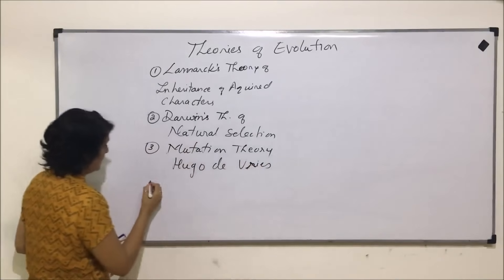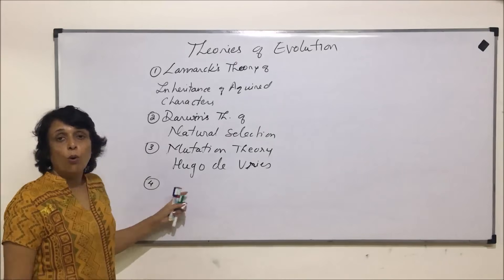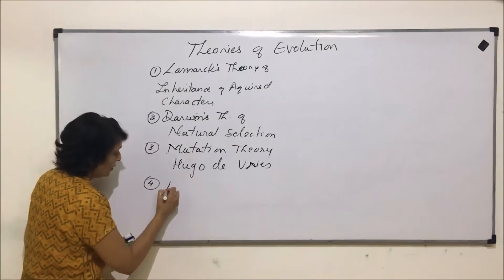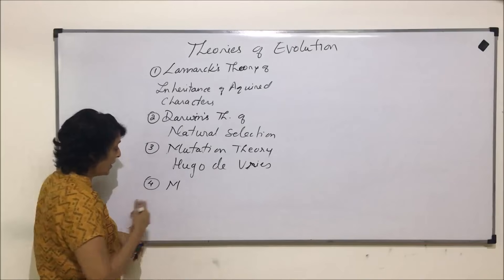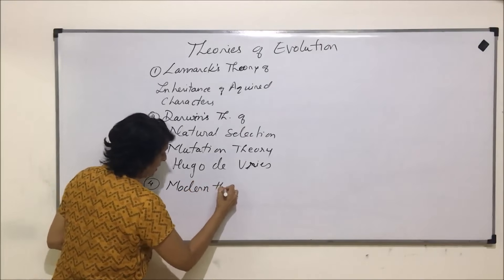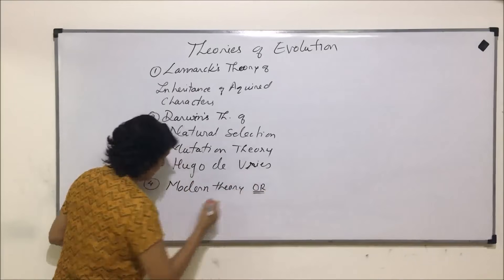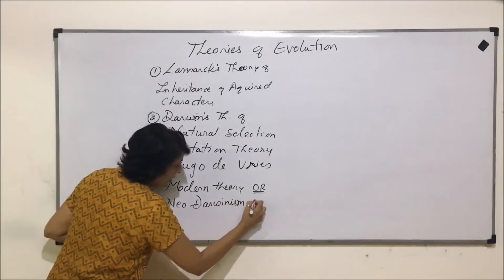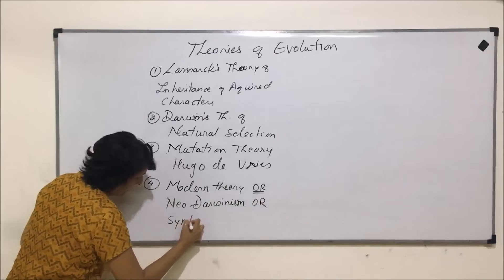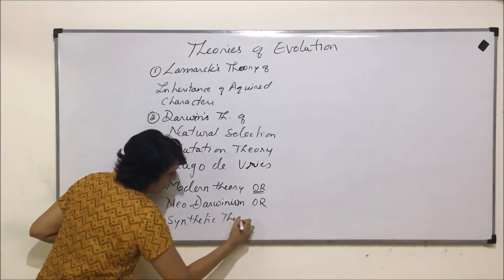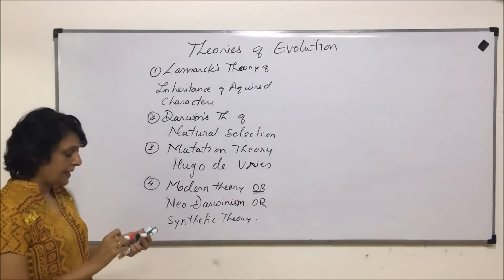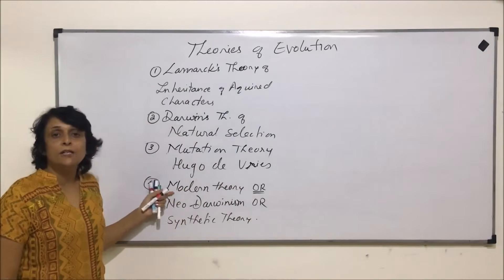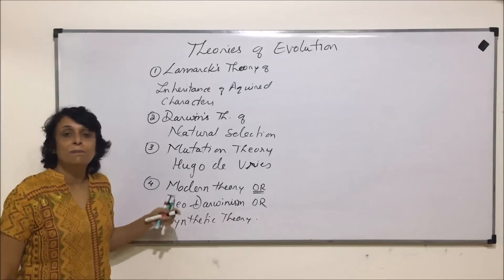The fourth theory is called the modern theory, or synthetic theory, or Neo-Darwinism — three names given to the same theory. As the name tells us, the modern theory is the most accepted one, and it has been designed by combining a couple of the other theories. When we come to the details, we will talk about all these things.